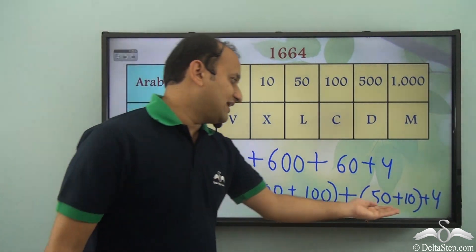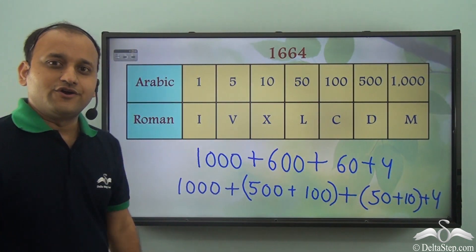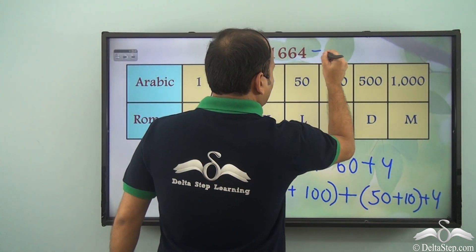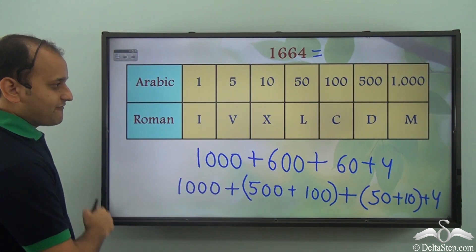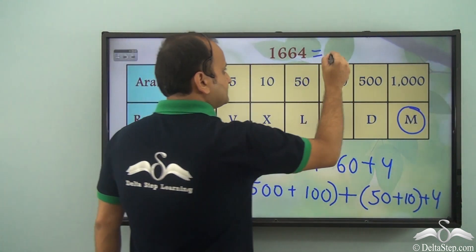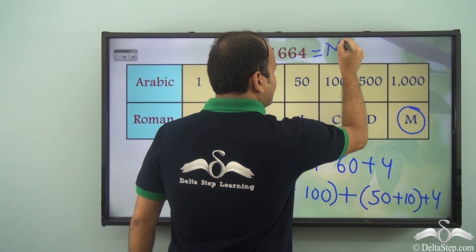So now, how do we write these in terms of Roman numerals? Well, let's see. First of all, we have 1000 which is M. So we have M.